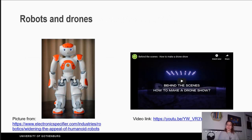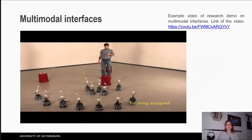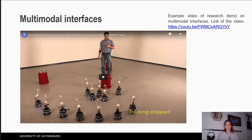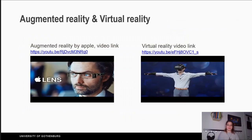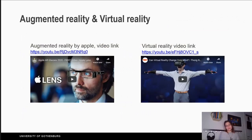Robots and drones. We talked about robots a little in the previous chapter, and for drones you most possibly know about them already. In this video you can see an art performance using drones. Finally, multimodal interfaces — in almost all the cases we went through in this video, the interfaces were combined. In this video you can see voice and gesture used together to manipulate a small army of robots. In another video you can see an art performance.